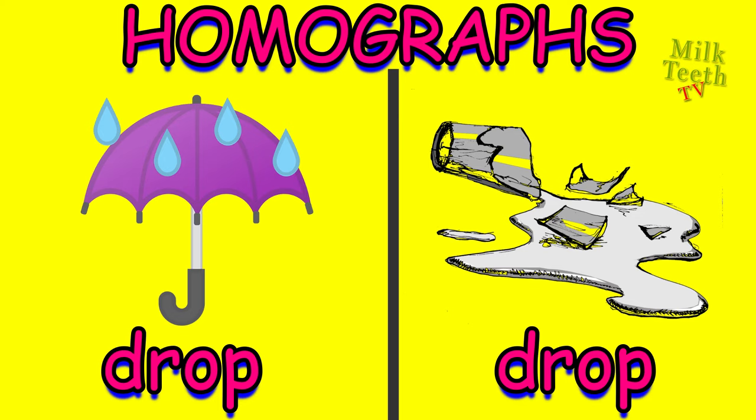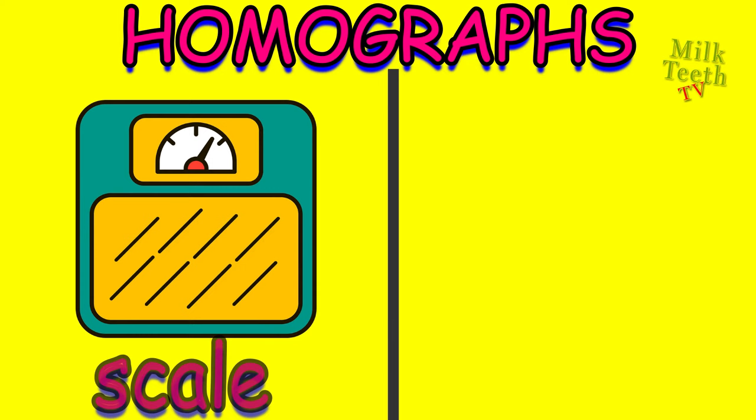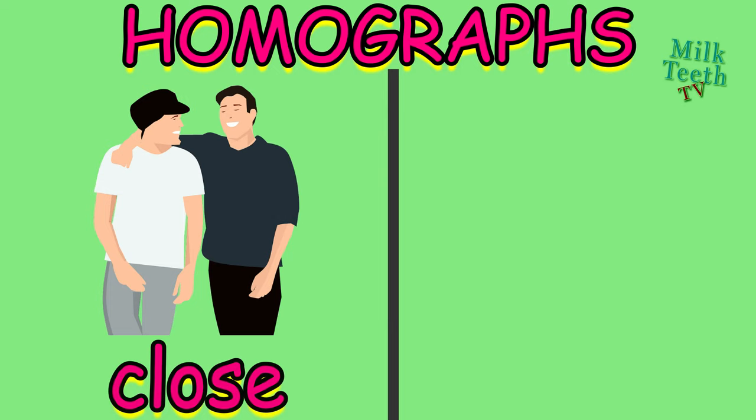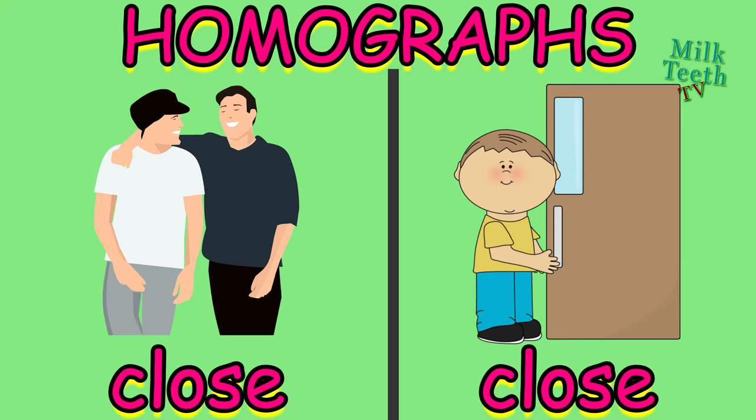Scale — a weighing scale, used to weigh things. And scale — on the skin of a fish. Close — means to stay with each other. And close — is to shut the door.